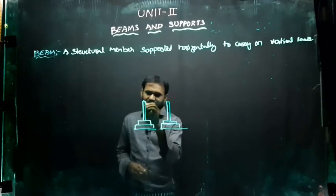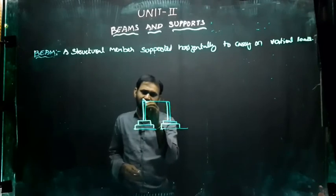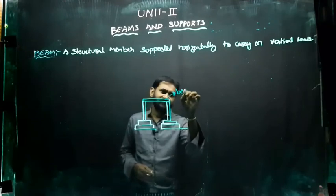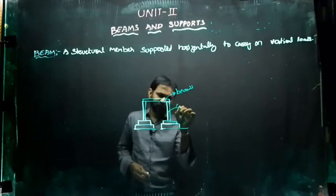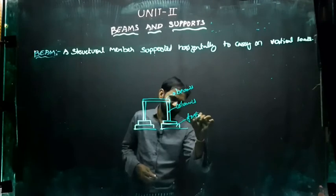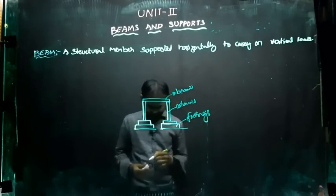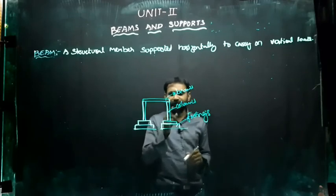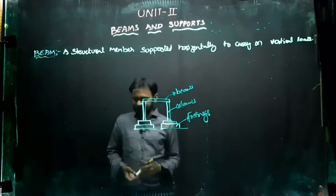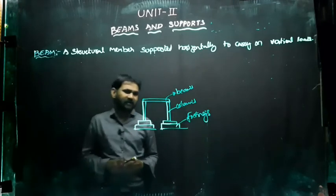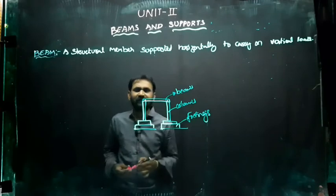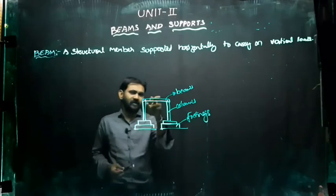On these columns you'll have beams — these are the horizontal members, these are called as beams. On these footings you'll be having columns, and to give the support between column and column you'll be having a beam. This beam contains steel in it — it means provided with steel bars in it.